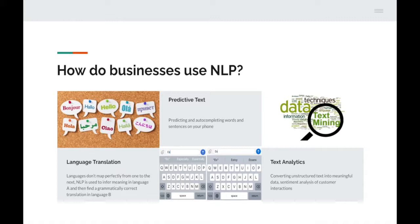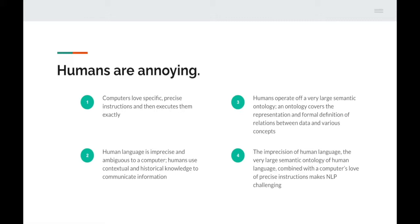Next up: humans are annoying. Computers love specific, precise instructions and love to execute them exactly. They do not like ambiguity, and sadly human language is imprecise and ambiguous to a computer. Humans also use contextual and historical knowledge to communicate information. For example, suppose I ask a smart assistant 'who is Barack Obama?' and it says he was the President of the USA. Then if you ask 'how old is he?' — in isolation, 'how old is he?' means nothing because the computer doesn't know who 'he' refers to.